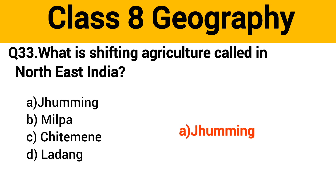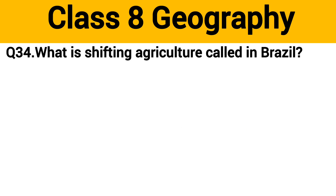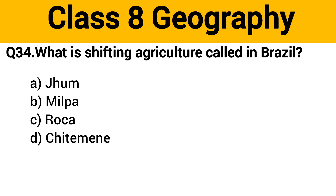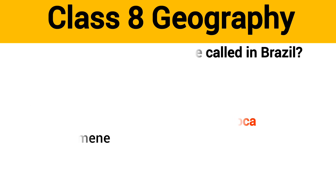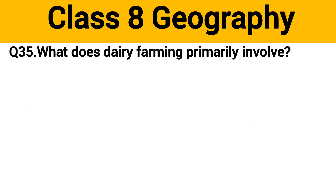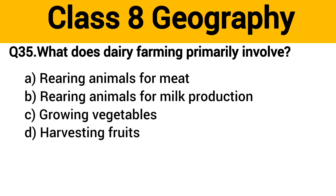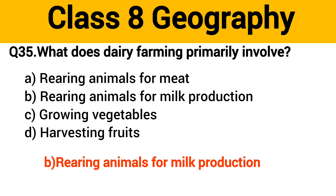Question number 33: What is shifting agriculture called in Northeast India? The right answer is option A: Jhum. Question number 34: What is shifting agriculture called in Brazil? The right answer is option B: Roca. Question number 35: What does dairy farming primarily involve? The right answer is option B: rearing animals for milk production.